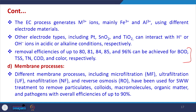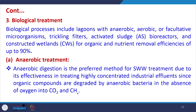Membrane processes including microfiltration, ultrafiltration, nanofiltration, and reverse osmosis (RO) can also be used for SWW treatment to remove particulates, colloids, macromolecules, organic matter, and pathogens. These processes are very commonly applied in slaughterhouse wastewater treatment.